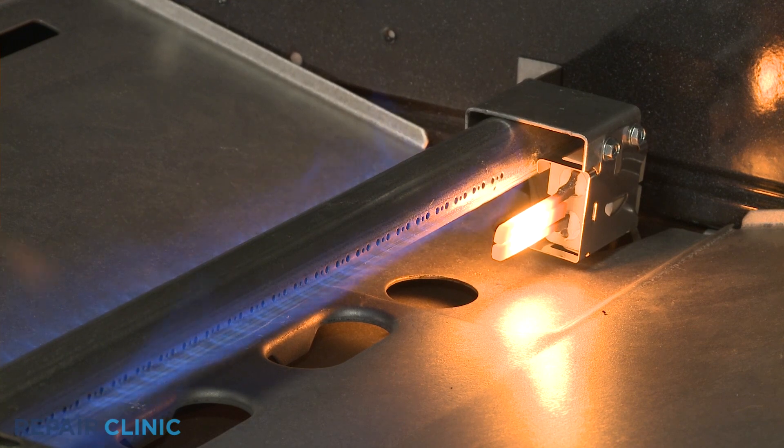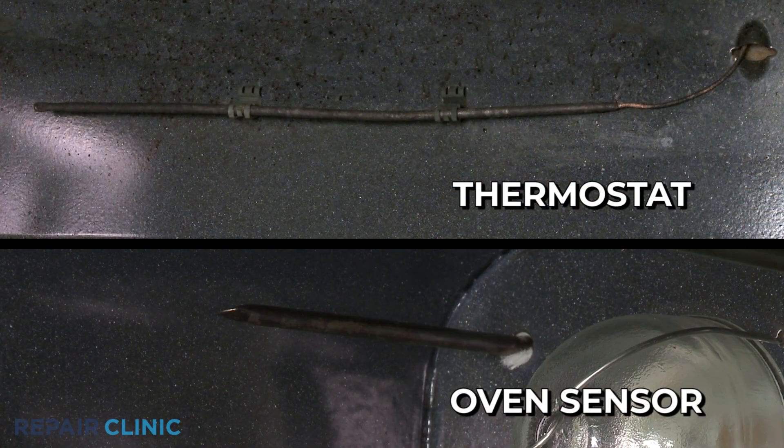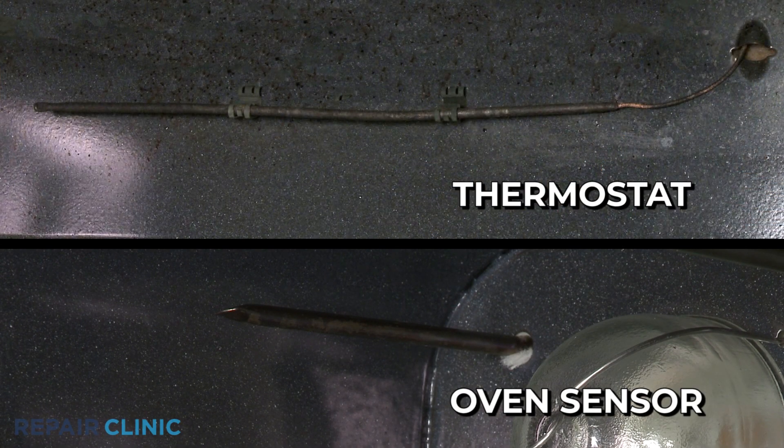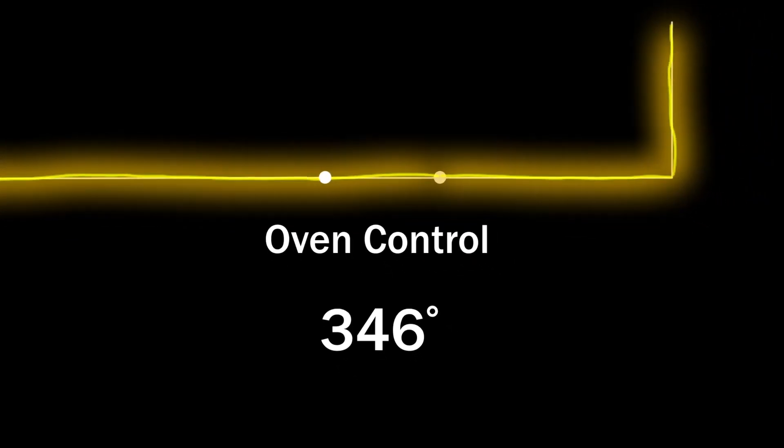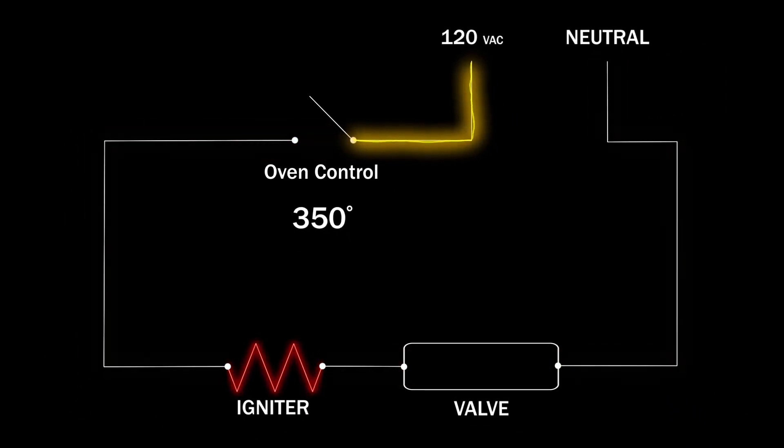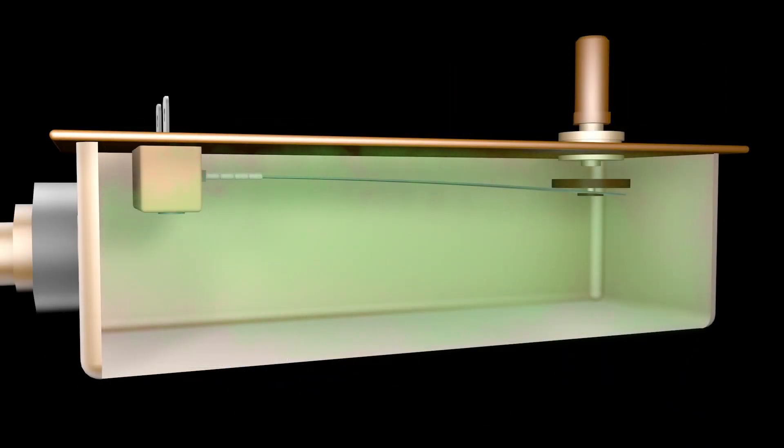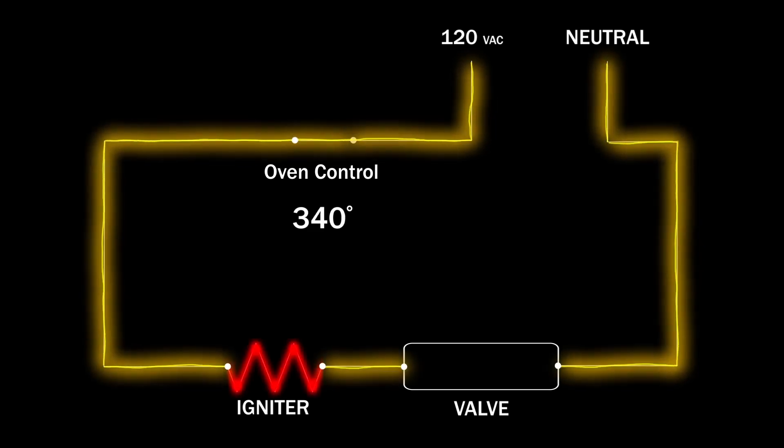The igniter remains on to keep the safety valve open until the oven reaches the designated cooking temperature. The temperature is monitored by the sensing bulb on the thermostat or by the oven sensor. When the selected temperature is reached, the oven control shuts off the voltage to the igniter. The arm inside the safety valve closes, shutting off the gas supply to the burner. This cycle repeats throughout the cooking process to maintain the proper temperature.